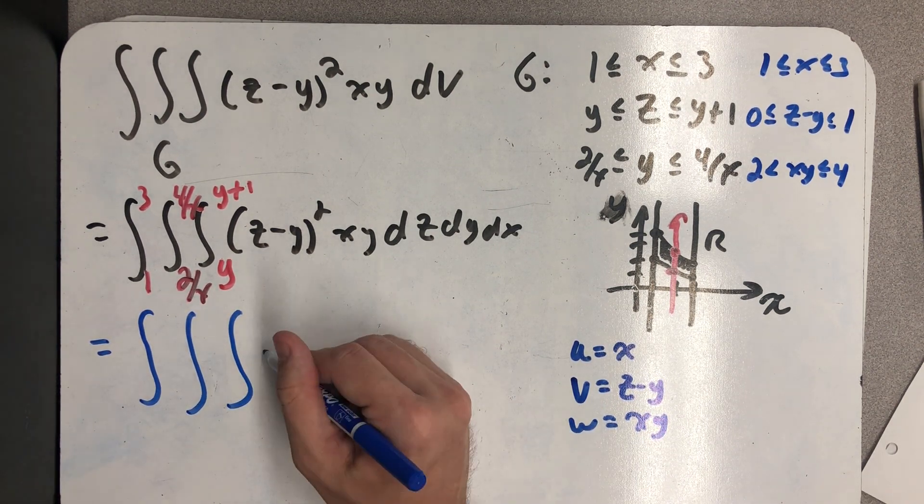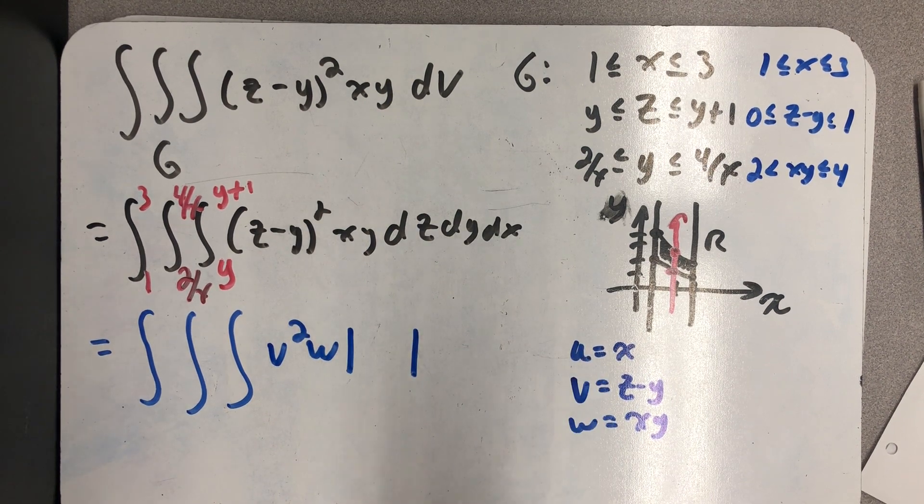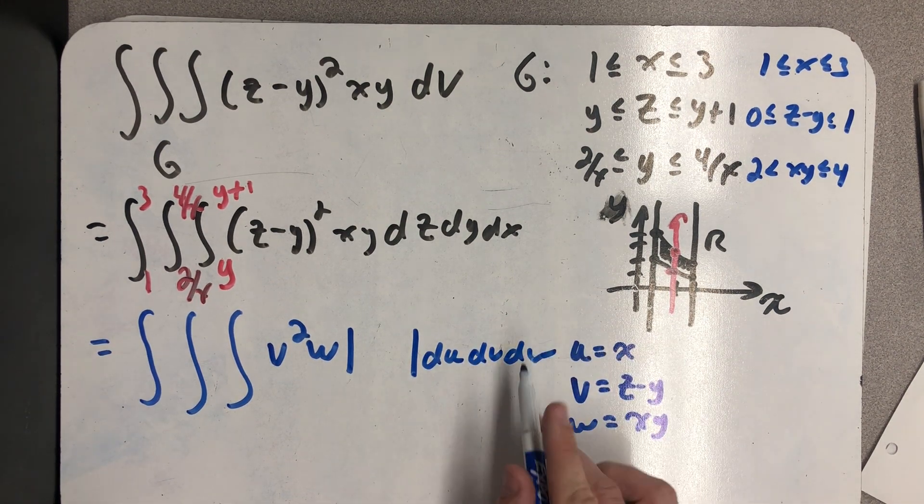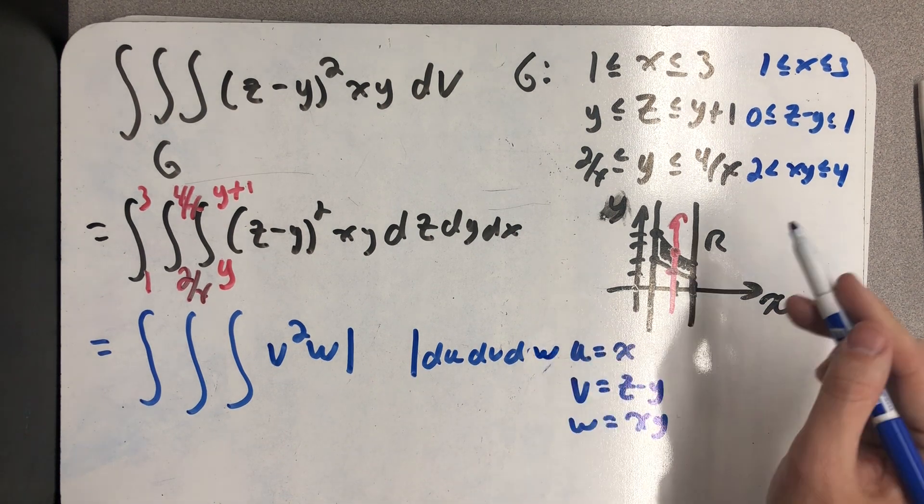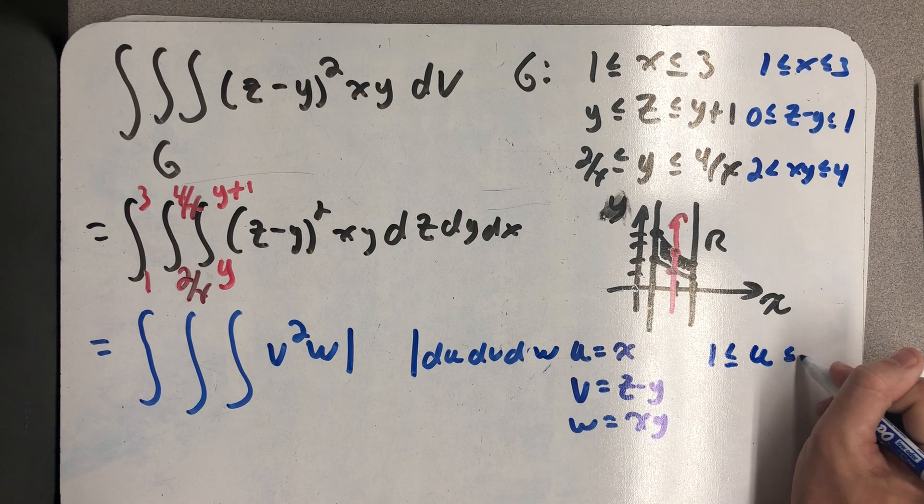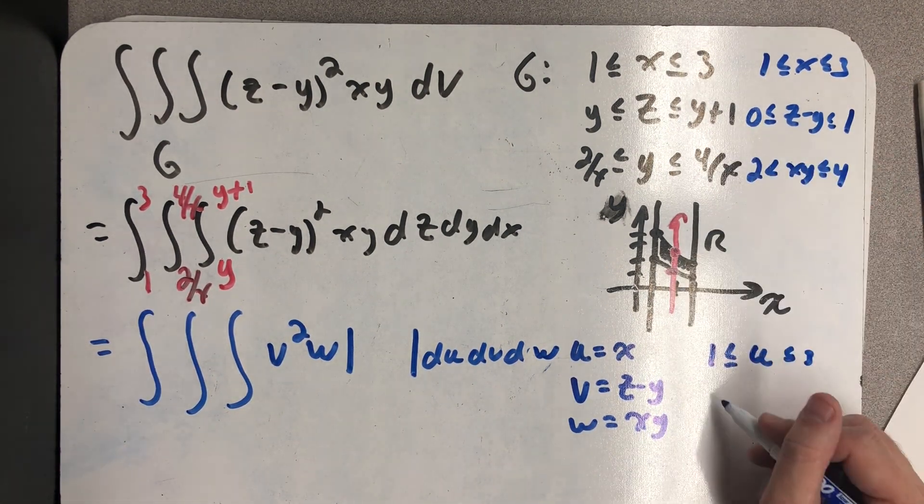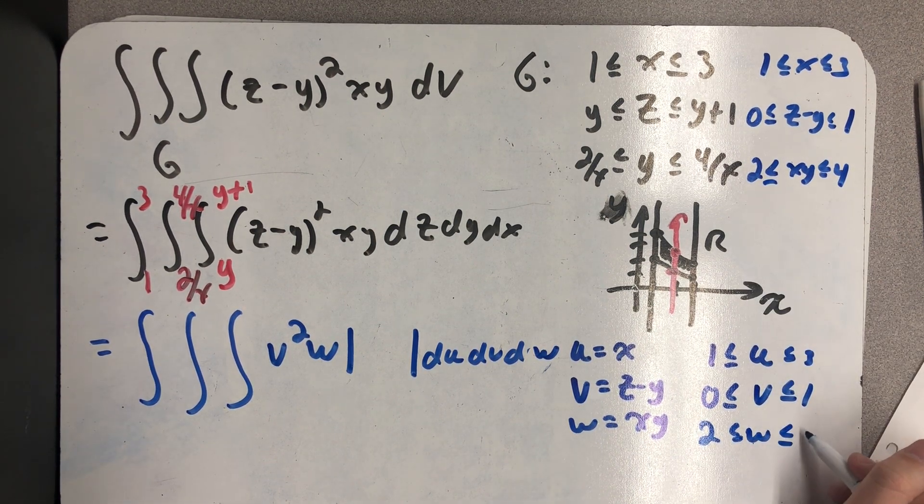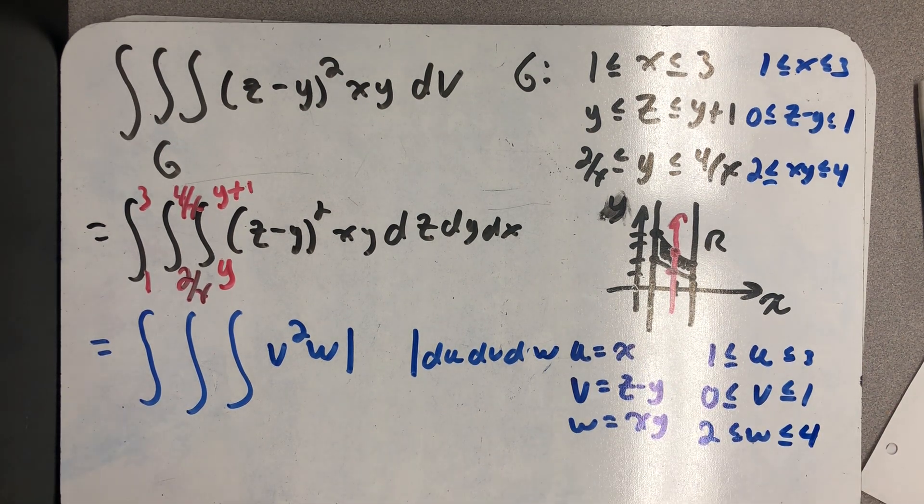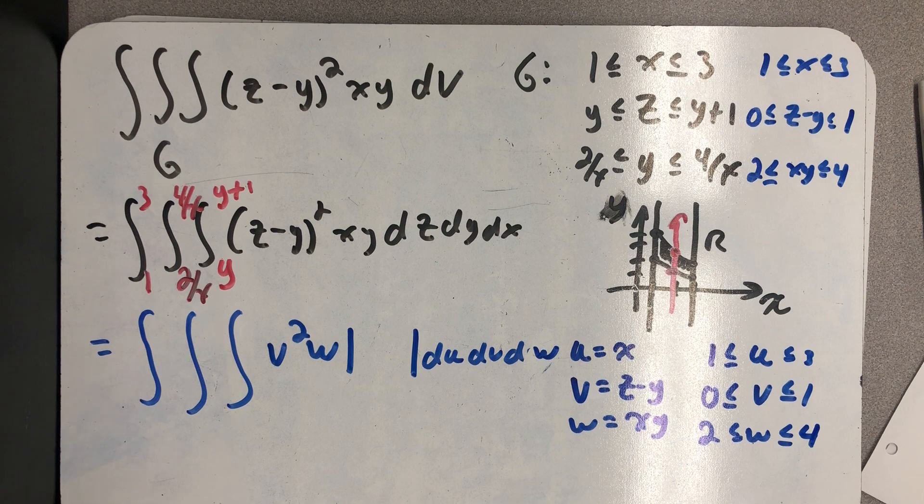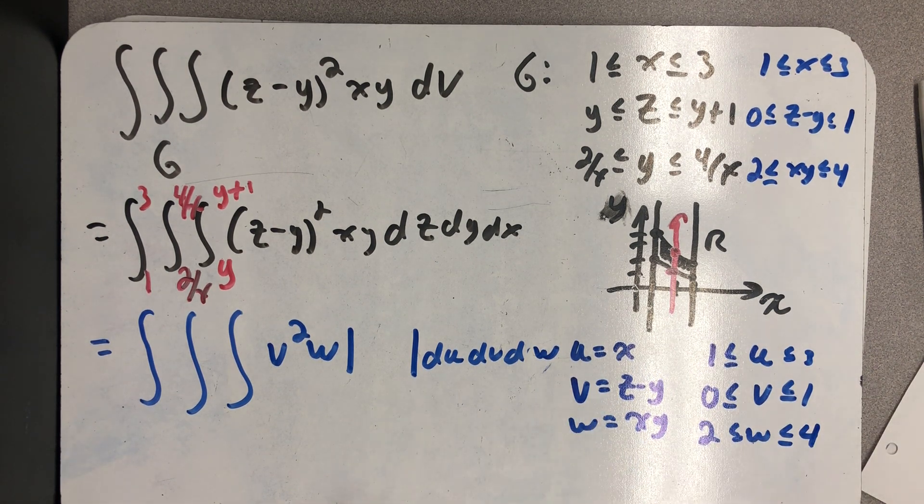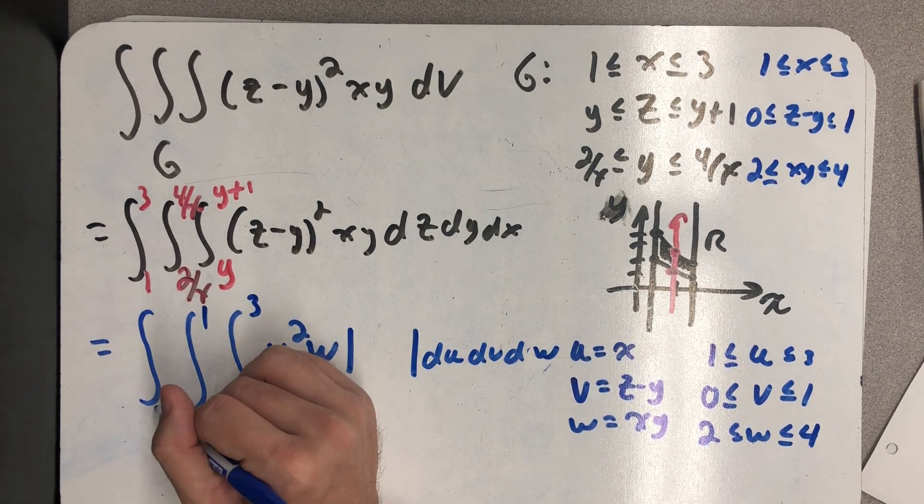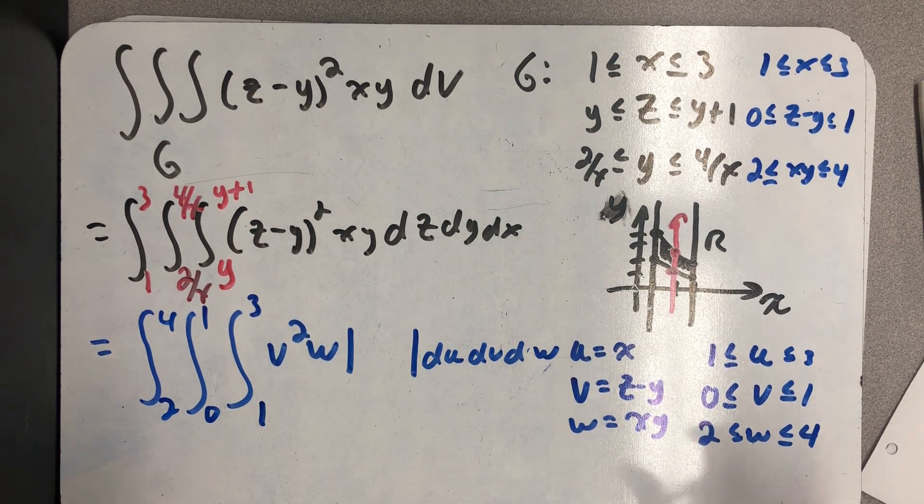And so right away, my integrand gets easier, right? Because now I have a v squared w multiplied by the absolute value of a Jacobian. And then my new variables, du, dv, dw, in whatever order you want to do them in. Because in this substitution, well, u is between one and three, because u equals x. V is between zero and one. And w is between two and four. Right? Because these are constant bounds. Fubini's theorem applies. And I could literally do the integration in whatever order I chose. So I've chosen u, v, w as my order. So I can go and put bounds on this triple integral.